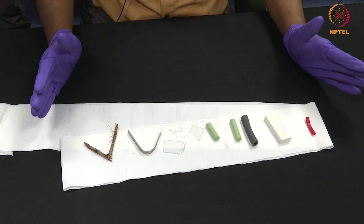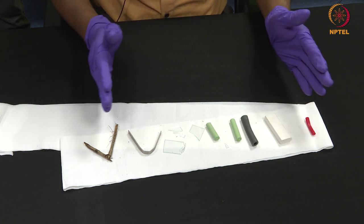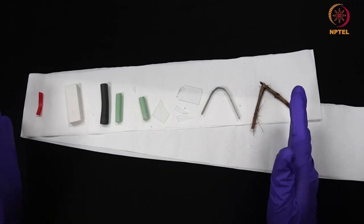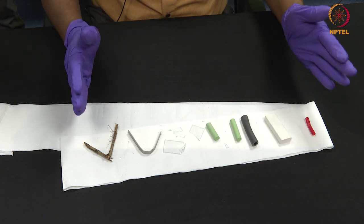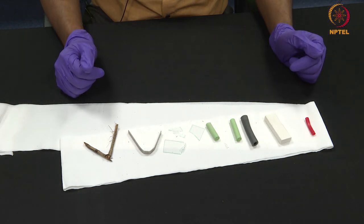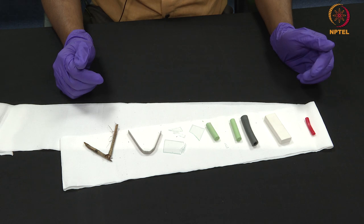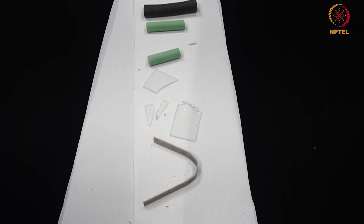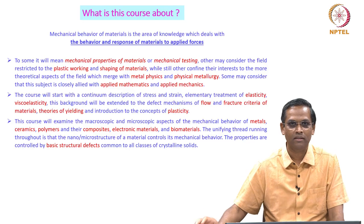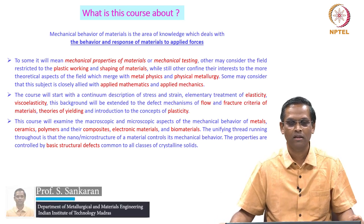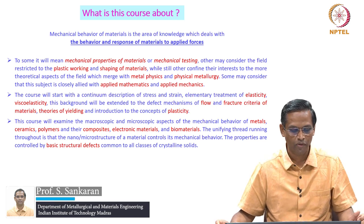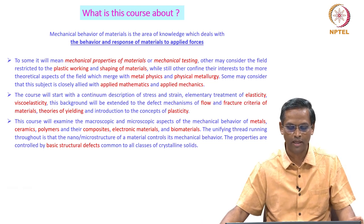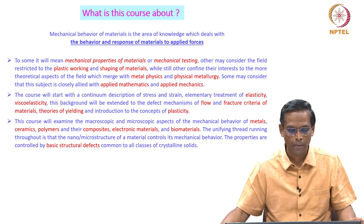What you now observe from all this is that you can categorize these materials into different classes. Even though I applied a similar bending force on each material, each one responded very differently. This is what we are going to discuss in detail in this course. Mechanical behaviour of materials is the area of knowledge which deals with the behaviour and response of materials to applied forces.